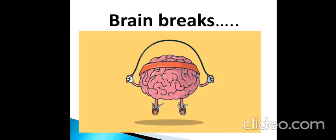Now let's see an energizer. If I say triangle and rectangle, show a thumbs up. If I say circle and square, show thumbs down.